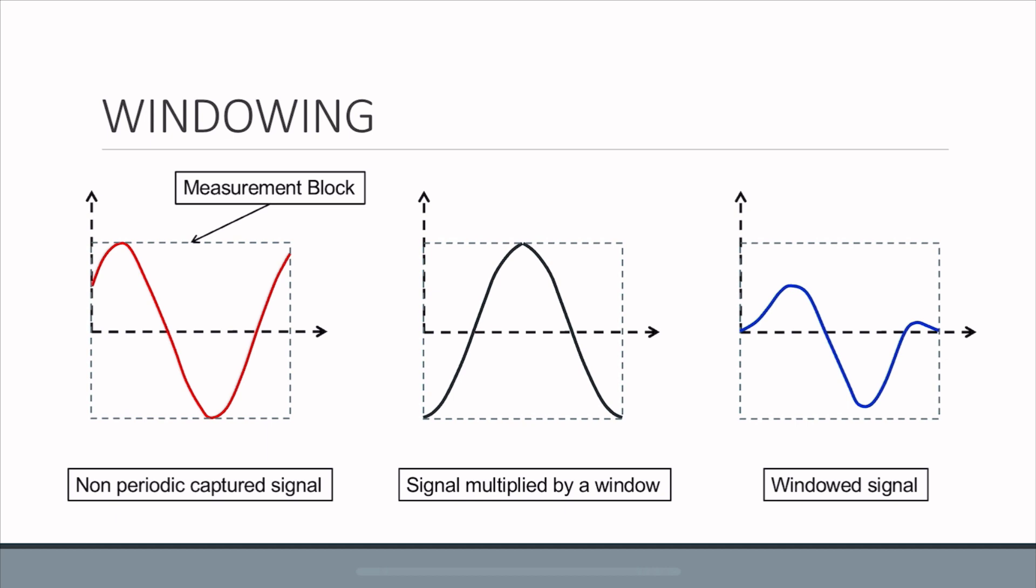But we can overcome this limitation by using something called windowing. When you multiply a signal by a window—there are many types of windowing, but just a common Hamming window—you're forcing the signal to be periodic in the time domain. You're forcing the signal to start at zero and stop at zero despite having captured the signal non-periodically.